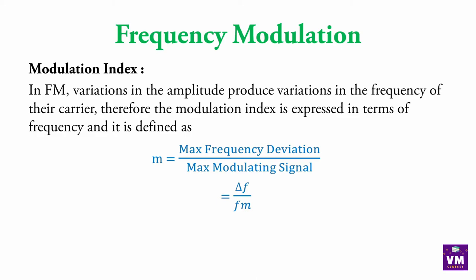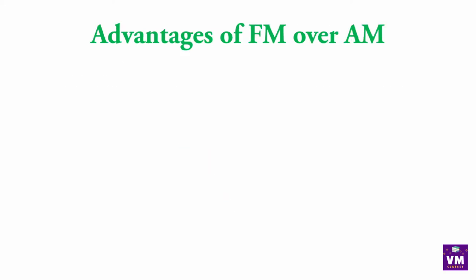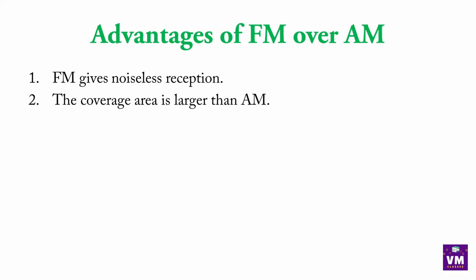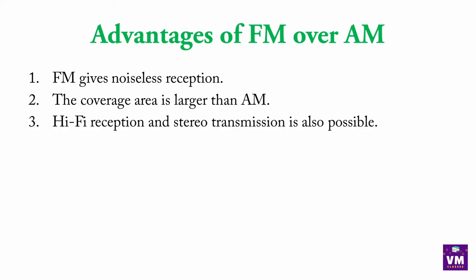Yeh formula aapko yaad rakhna hai. Exam mein numerical aaya toh values di hongi aur aapko sahi jagah formula likhke values put karke FM ka modulation index nikalna aana chahiye. Advantages of FM over AM: FM gives noiseless reception, coverage area is larger, hi-fi reception is possible, stereo transmission is also possible, and adjacent channel interference is reduced.